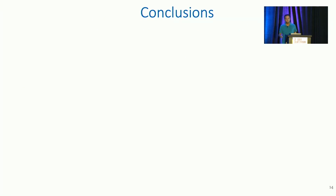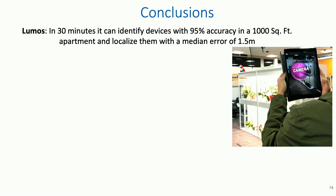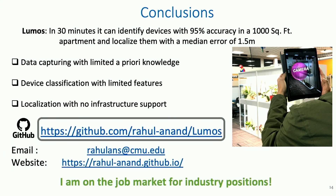To conclude, you don't have to worry about IoT devices spying on you next time you go to an Airbnb or a hotel, because we present a practical system called Lumos. In 30 minutes, it can identify devices with 95% accuracy and can also localize them with a median error of 1.5 meters. This is made possible by our contributions in data capturing with limited a priori knowledge, device classification with limited features, and localization with no infrastructure support. We have released a very early prototype of our system at the provided link, so feel free to check it out, and I will be happy to take any questions. Thank you.